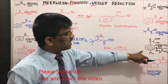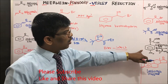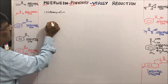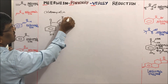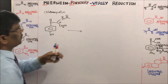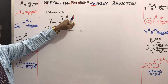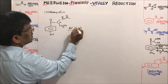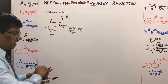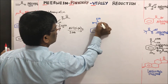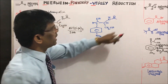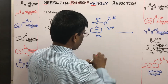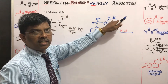An important application of MPV reduction is in the total synthesis of chloromycetin. The starting material contains a para-nitro group and an NHAc (acetamide) group. The amide is not reduced by aluminum isopropoxide — only the aldehyde/ketone is. Treatment with aluminum isopropoxide in isopropyl alcohol gives exclusively the alcohol.